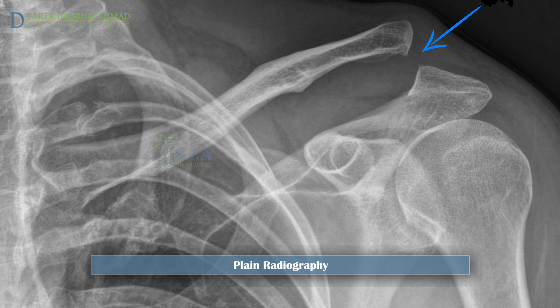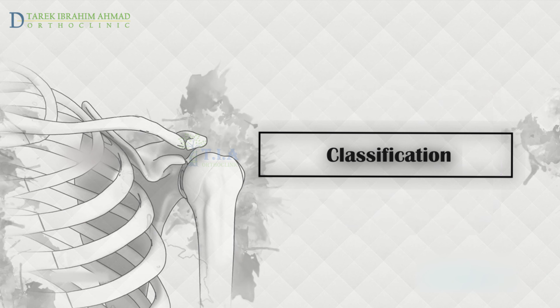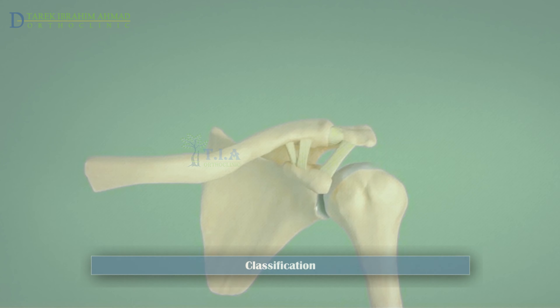Plain radiographs (x-ray) confirm the diagnosis of AC joint dislocation. Common findings include misalignment of the joint, which indicates an AC dislocation. Sometimes a stress view is helpful — the x-ray is taken while the injured person holds a weight to accentuate the separation. Stress views may be helpful to evaluate type 3 injuries if surgery is being considered, or if an AC separation is suspected but not visible on the initial x-rays.